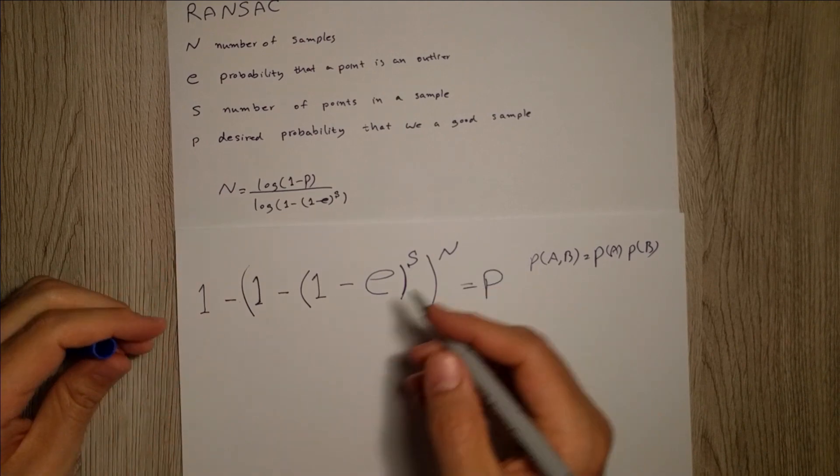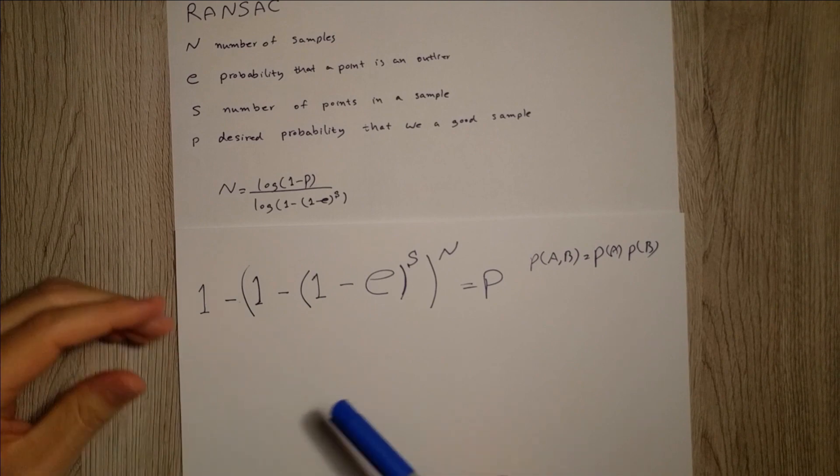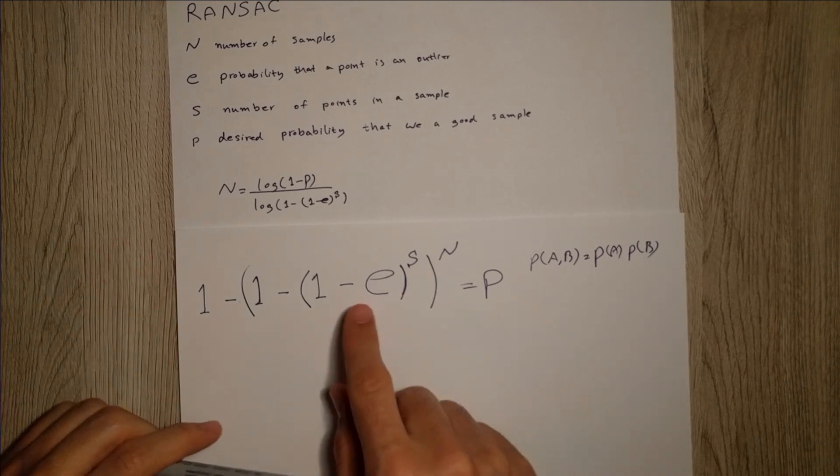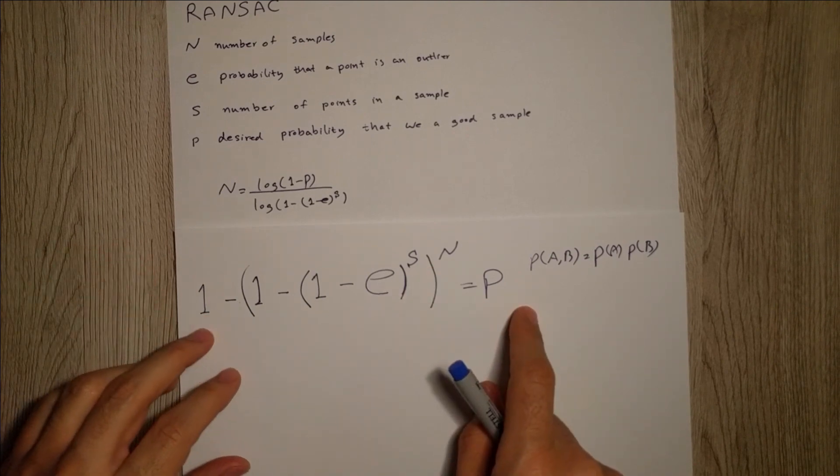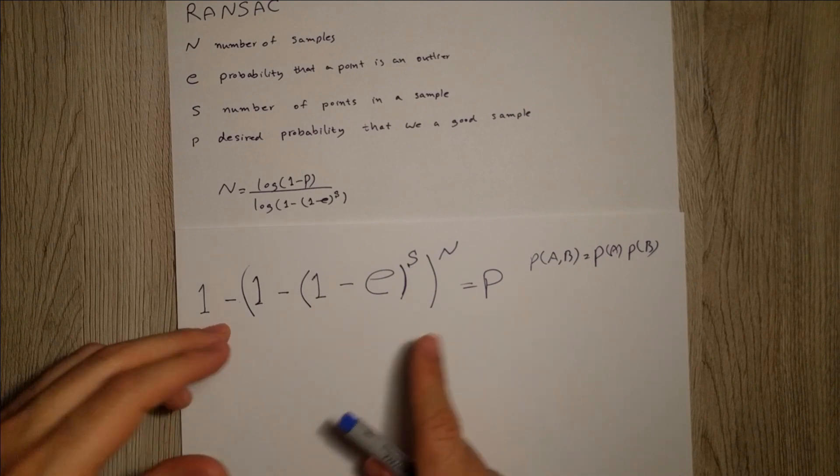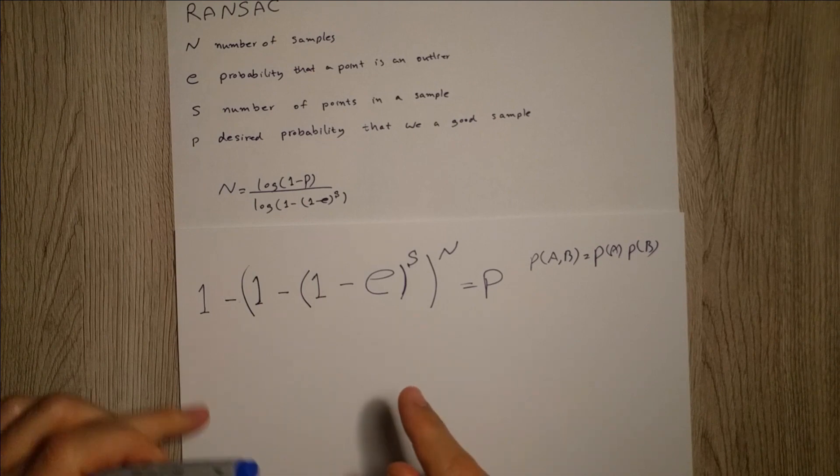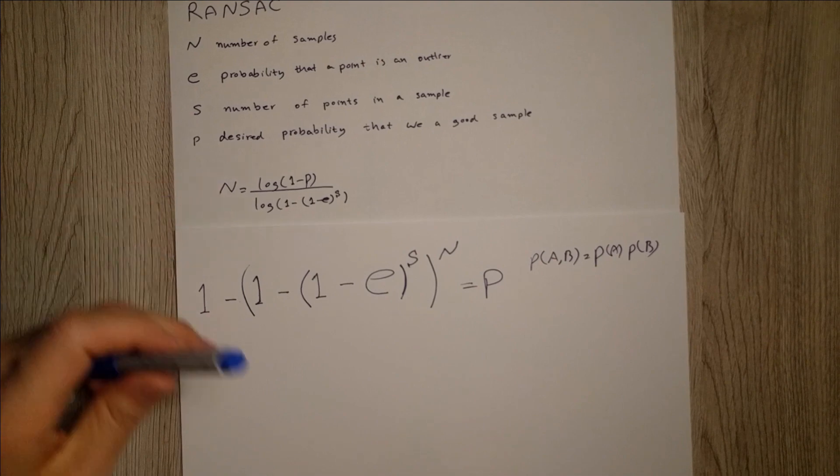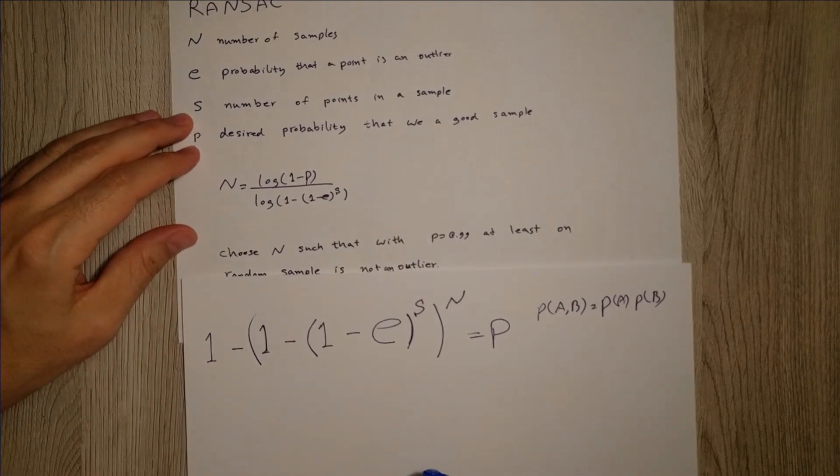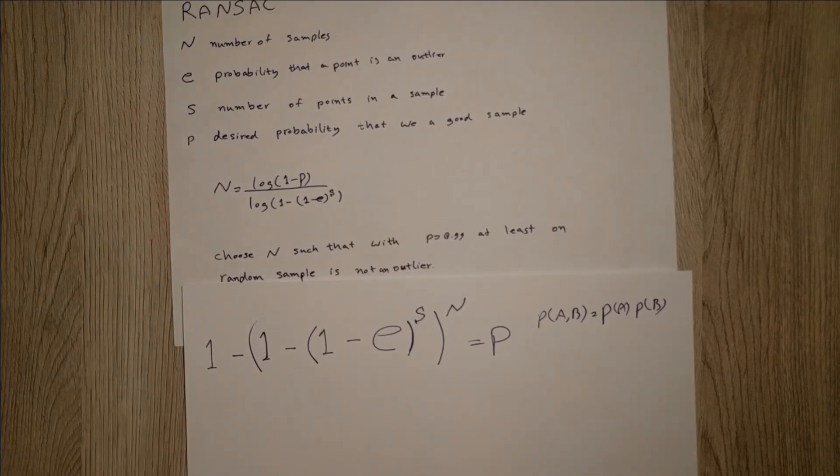So the rest of the formula is easy. You just have to take the logarithm from both sides, move the one to this side, take the logarithm a couple of times, and then you will get this formula. But the intuition behind that is we're looking for N such that with a good probability like 99%, there is at least one inlier in our data set.